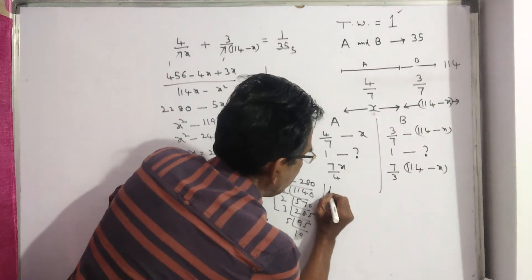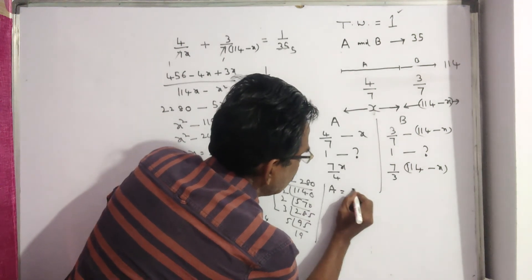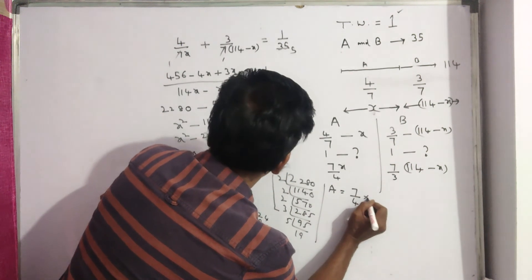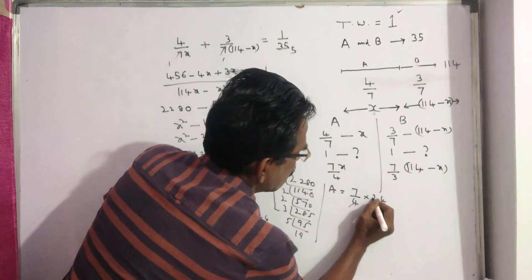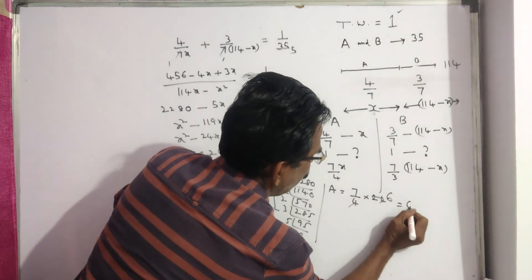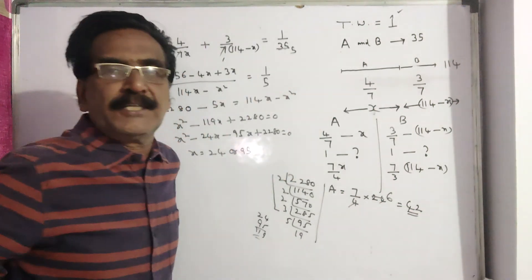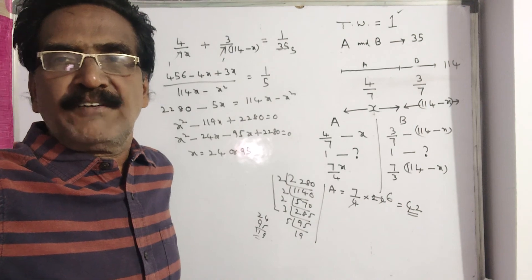Now A can complete the work in 7 by 4 into x, 24, 6 7s, 42 days friends. Okay friends, thank you, have a nice day.